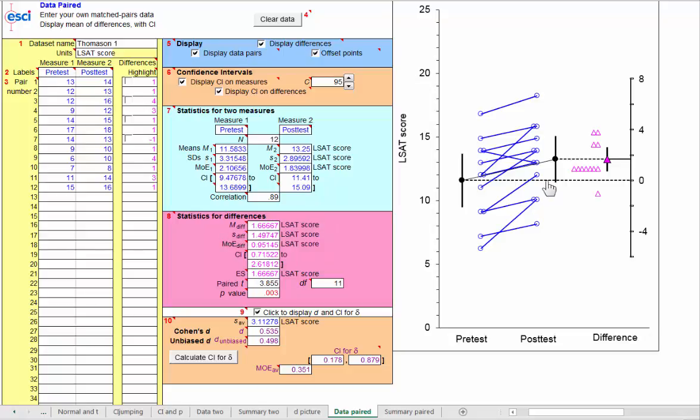So be quite clear about the different roles of these two different estimates of standard deviation. Standard deviation of the differences for calculating our confidence interval on the effect size, and S-av, our best estimate of the population standard deviation that we use as our standardizer for Cohen's D.